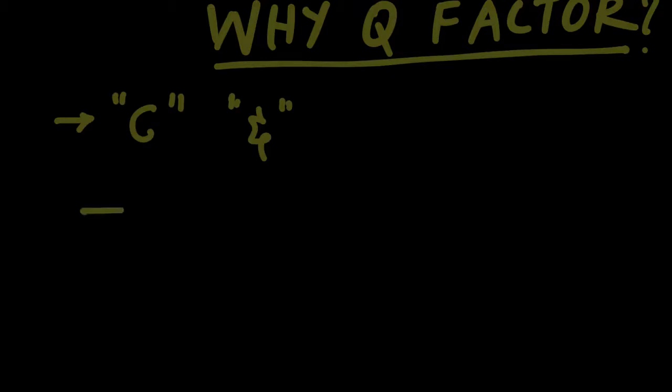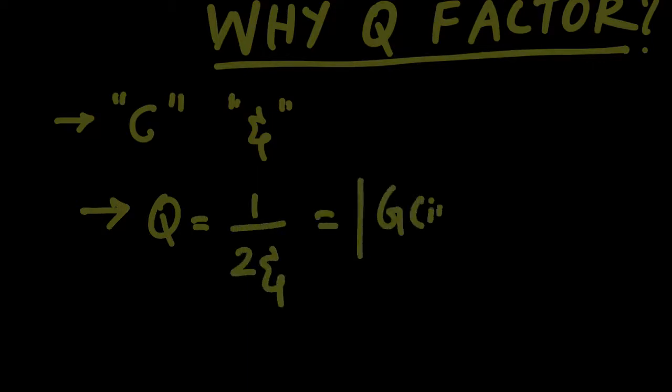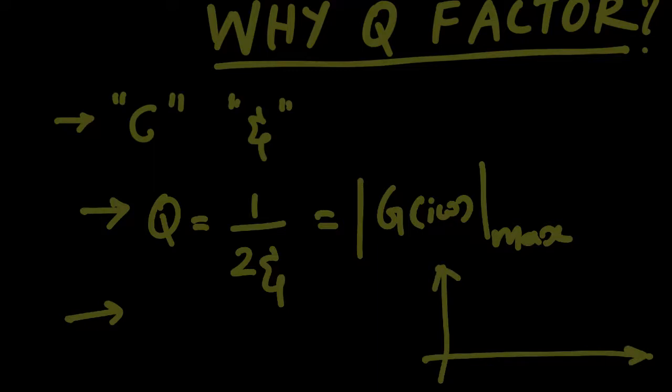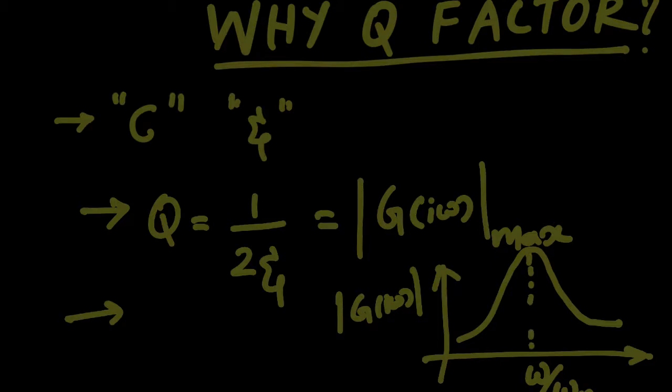In the previous lecture, I told you Q factor is defined as 1 by 2ζ, and this is the maximum value of frequency response. What we will do is we will run an experiment. We will excite the system at different frequencies, and then we will compute the magnitude of G(iω) with respect to ω by ωn. Then I'll get a plot something like this. If I know the maximum value of this function, then this is my Q. So you run an experiment first, plot this curve, calculate the Q factor, then from Q factor we can compute zeta.